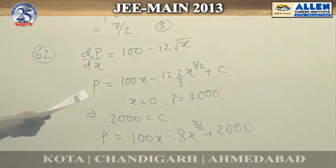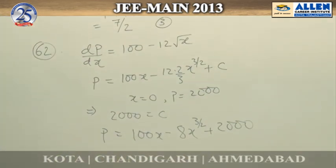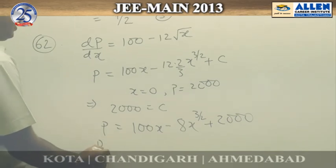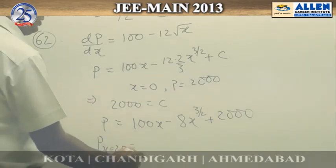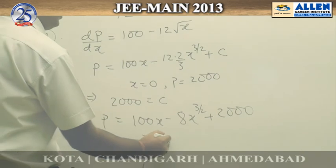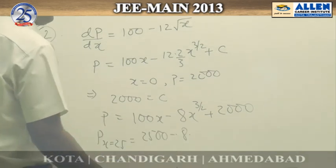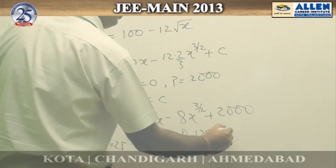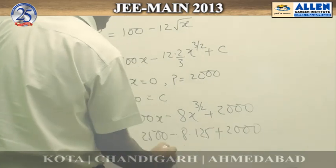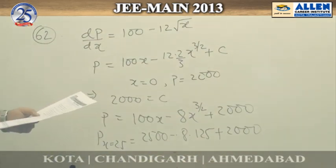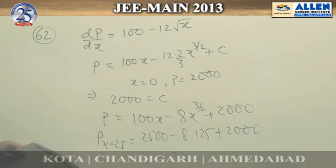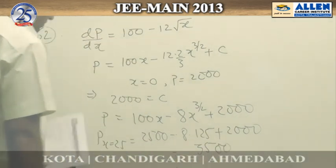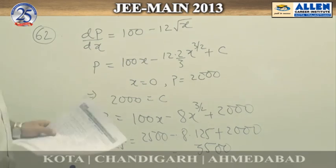We are asked to find p when x = 25. Putting x = 25, we get p = 100(25) - 8(25)^(3/2) + 2000 = 2500 - 8(125) + 2000 = 2500 - 1000 + 2000 = 3500. The correct option is 3500, which is option number 3.